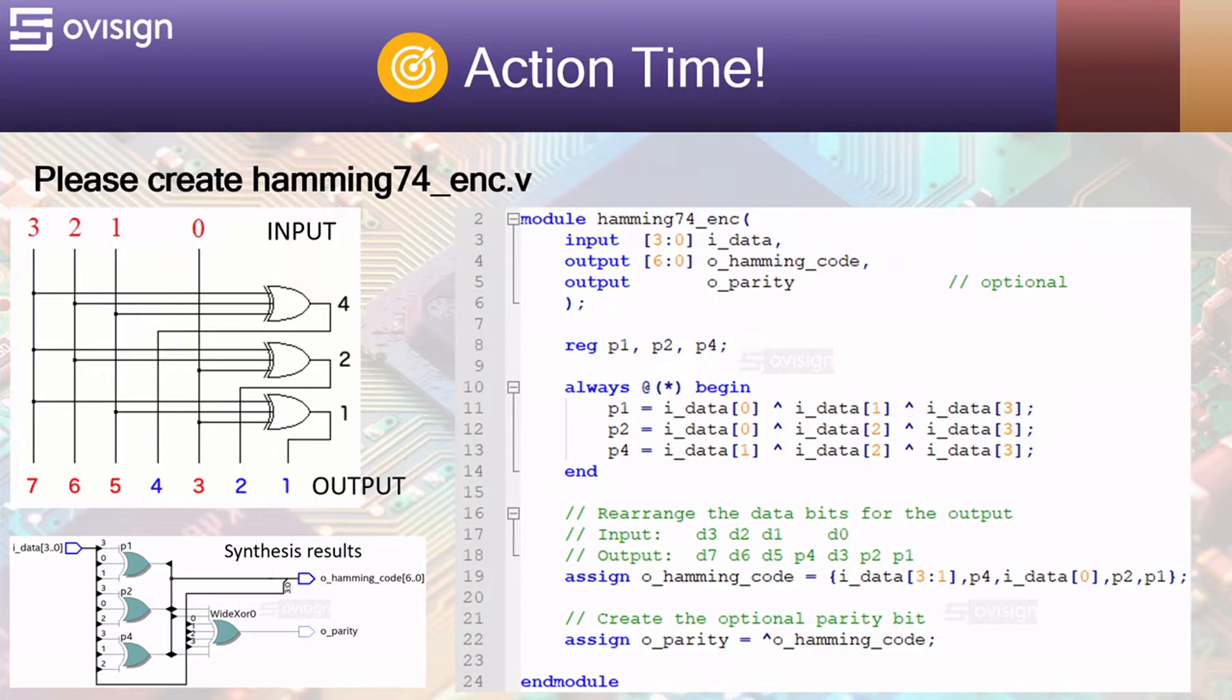And now it's action time! Let's implement a Hamming 7 for encoder for FPGA and ASIC using Verilog. The circuit has four input bits numbered from 3 to 0 and seven output bits numbered from 7 to 0. We use red for the input bits and blue for the parity bits. Each parity bit is calculated using a three-bit XOR gate according to our previously presented tables and Venn diagrams.